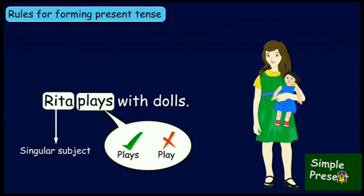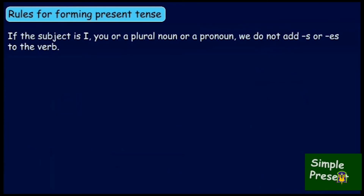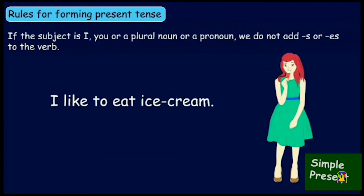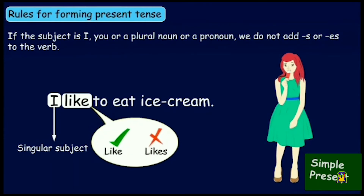So kids, we have learned that if the subject is I, you, or a plural noun or pronoun, we do not add S or ES to the verb. 'I like to eat ice cream.' Here, the subject is I. According to the rule, if the subject is I, we do not add S or ES to the verb. So we have used 'like' and not 'likes.'